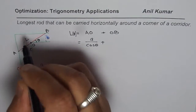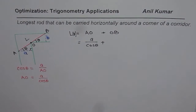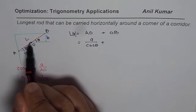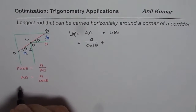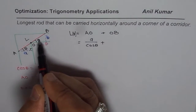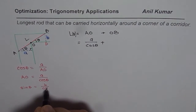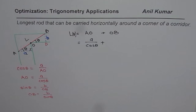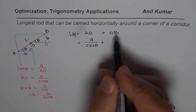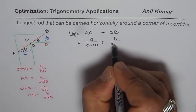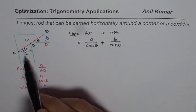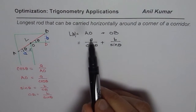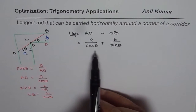Now, can you find OB in terms of theta? We use sine theta because we know the width of the corridor as 'b'. In triangle OBD, sin(θ) = b / OB, so cross-multiplying gives OB = b / sin(θ). So for any example where A and B are given — it could be 1, 2, 1.2, 1.5, whatever — the length is l(θ) = a / cos(θ) + b / sin(θ). That is how we get our equation.